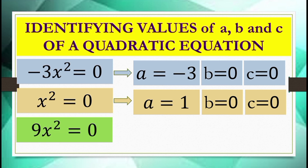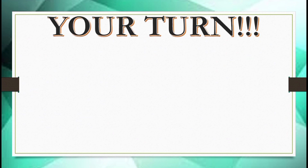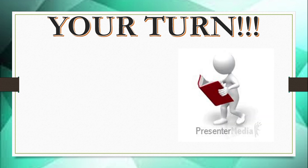For 9x² equals 0, a is equal to 9; b and c are both 0. I think you can do this — now it's your turn! Dear buddies, kindly get a pen and piece of paper, then write your answers. You can pause this video to answer. Here are our equations.